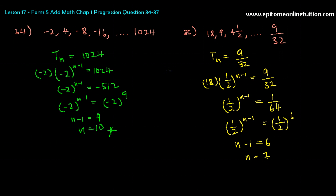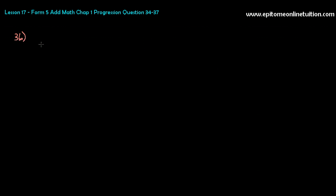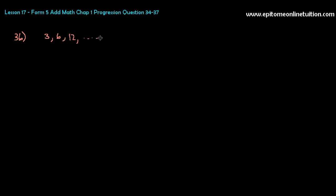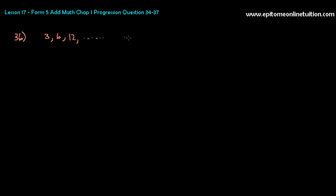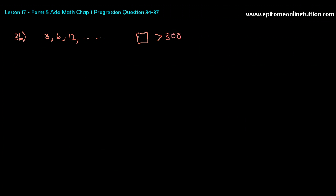Pretty simple. Let's look at 36. Which is the first term of GP 3, 6, 12 to exceed 300? This question is pretty common and a lot of students do not know how to do this. There's a GP that is getting bigger and bigger, and you're looking for the first term that exceeds 300.